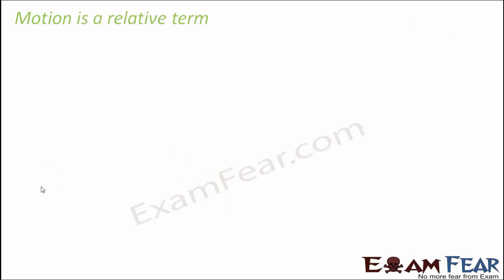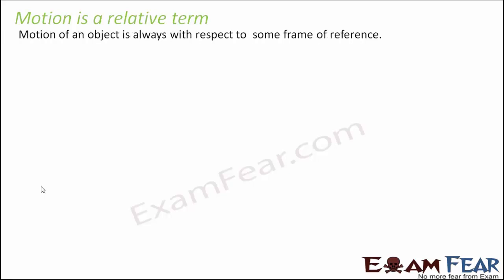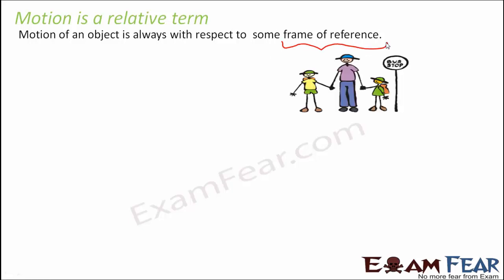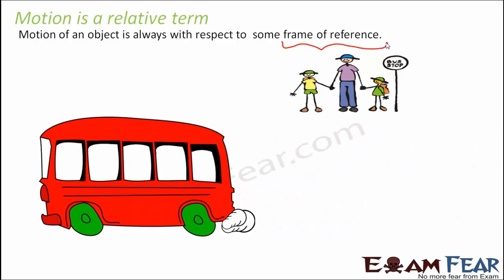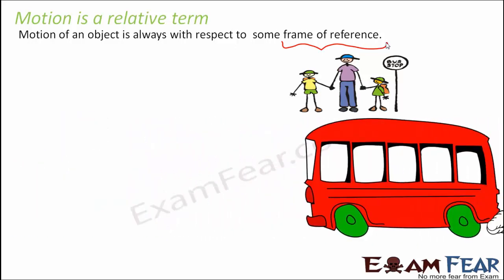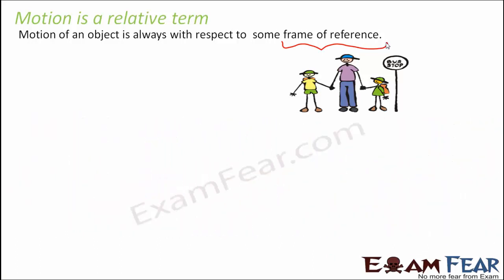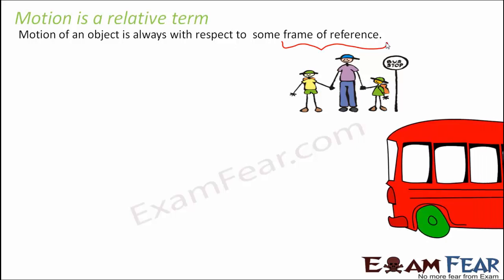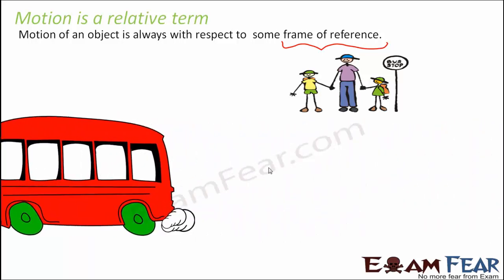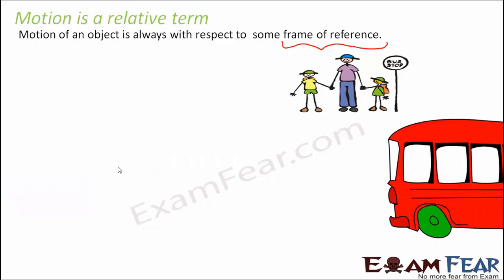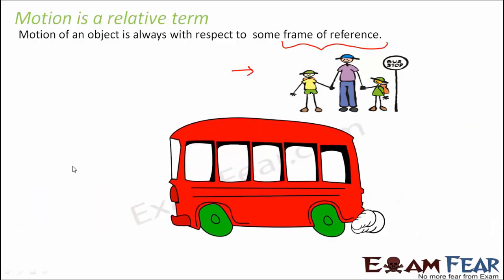Motion is a relative term — whenever we say an object is in motion, we say so with respect to some frame of reference. For example, if you are standing at a bus stop, you are at rest because you are not changing your position. When a bus arrives and passes by, you are still at rest. But think about the same situation from the perspective of a passenger sitting inside the bus.